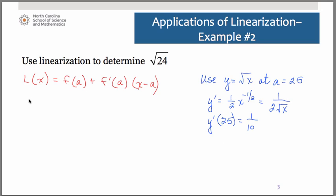As we substitute into our linearization, we get that L of x is equal to f of 25. Remember, that's simply 5, plus the derivative value, 1 tenth, times the quantity x minus the a value of 25. Distribute and simplify, and you should obtain 1 tenth x plus 2.5.